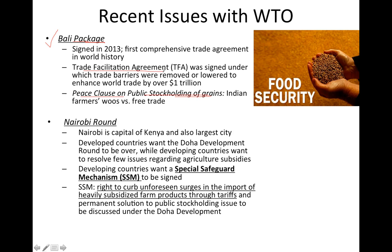The second outcome of the Bali Package was the signing of the Trade Facilitation Agreement, which was basically an agreement to lower trade barriers. Trade barriers include tariffs — taxes imposed on international trade — and non-tariff barriers such as quality control and administrative requirements on imports. For example, the European Union banned Indian mangoes, citing quality concerns, which is a classic non-tariff barrier. The Trade Facilitation Agreement aimed to remove or lower these barriers to enhance world trade by over one trillion dollars.